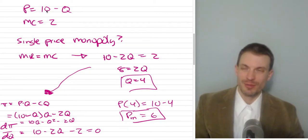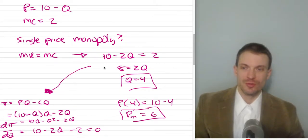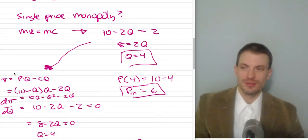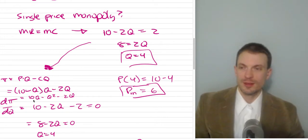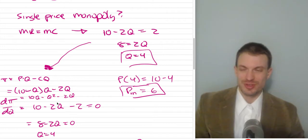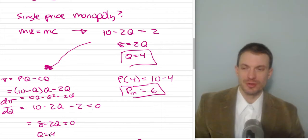Marginal revenue has the same vertical intercept as demand but twice the slope, so it's 10 minus 2Q. We could also write out profit: profit equals revenue minus cost, which is (10 minus Q) times Q minus 2Q. Distributing: 10Q minus Q-squared minus 2Q. Taking the derivative: 10 minus 2Q minus 2 equals 0. Solving, the monopoly's quantity is 4.